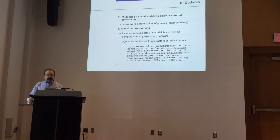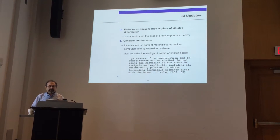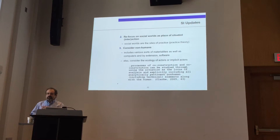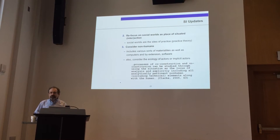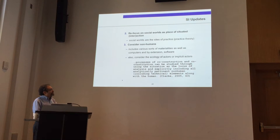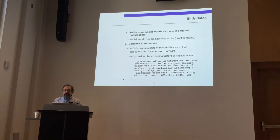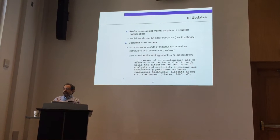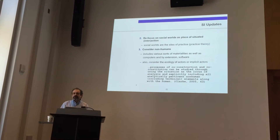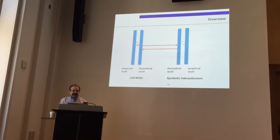The second move was a refocus on social worlds as places of situated interaction. There are some boundaries to social worlds — some things are occurring within social worlds and some things are outside of any given one. Together this means you start looking at practices. The third thing, which I find most interesting, is to start considering nonhumans. In many ways this is an intellectual move to pick up some of Latour's work — it includes all kinds of materialities, including computers and software and geographical spaces. And also to include the ecology of actors or implicit actors. The first line is co-construction and co-constitution: we are constantly enacting our activity in relation to not just the situation at hand, but also the materialities at hand.